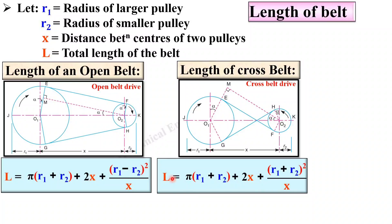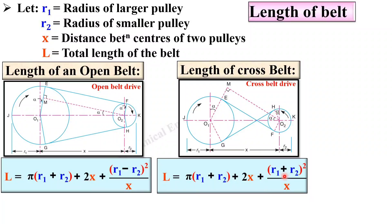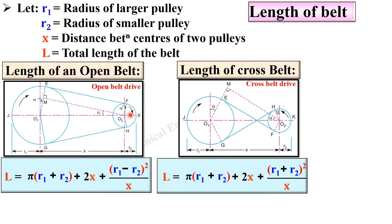The only change is here: in case of open belt drive it will be (R1 − R2), whereas in case of cross belt drive it will be (R1 + R2). Simply remember that the length of open belt drive is always a little bit less than cross belt drive, so that is why it will be minus for open and plus for cross.